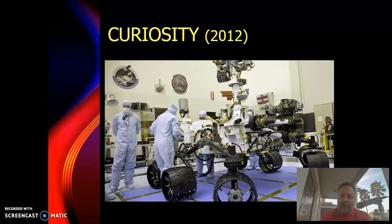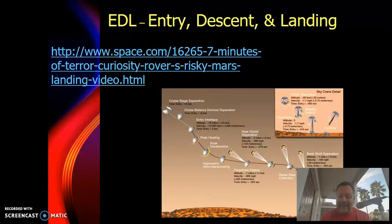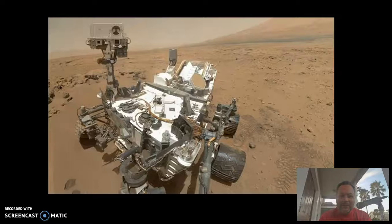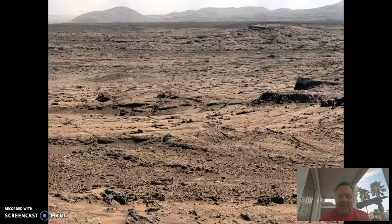They missed the 2010 window because Curiosity wasn't ready, so it got there in 2012. It's insanely large compared to little Pathfinder — you could hold Pathfinder in your hands. Definitely check out on YouTube the entry, descent, and landing — the sky crane maneuver is just amazing engineering. They call it seven minutes of terror because of the communication time delay: by the time they get the signal that it's hit the atmosphere, it's already on the surface one way or another. There's the Curiosity rover doing a selfie — gorgeous landscape, looks like Utah or New Mexico.